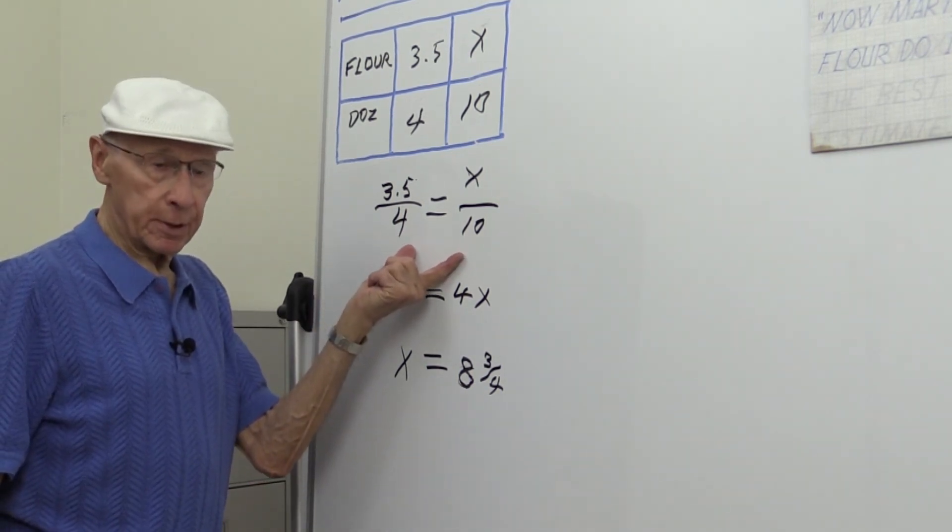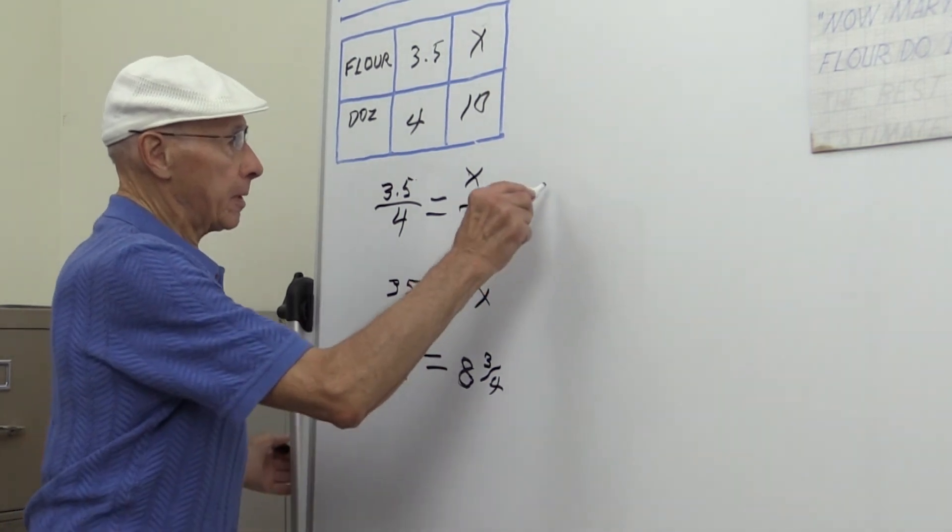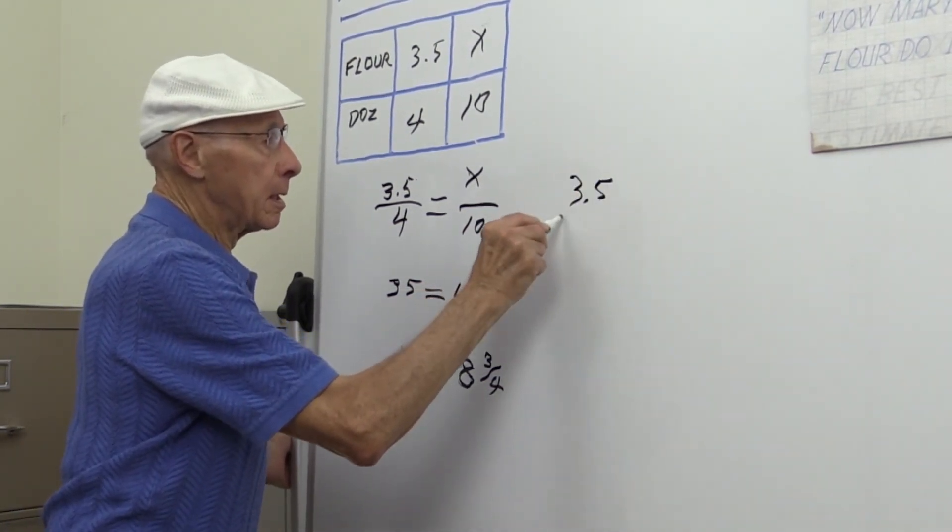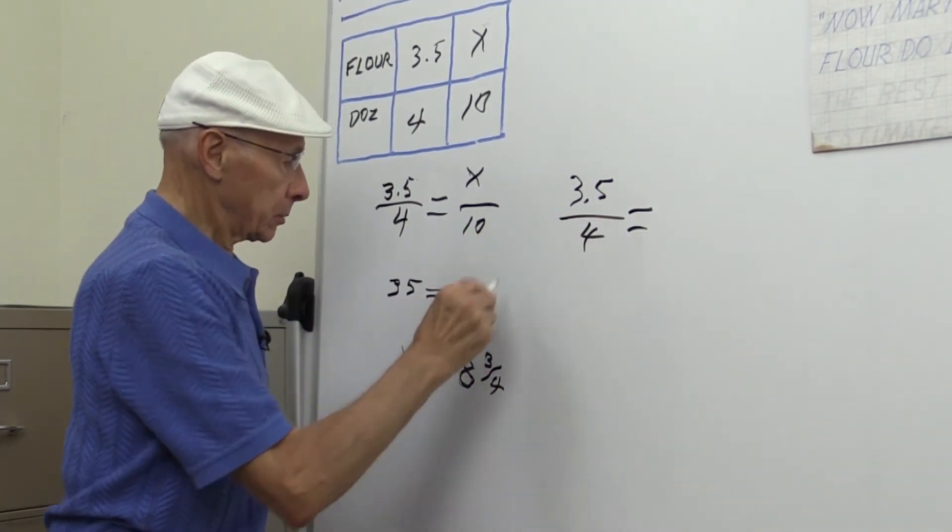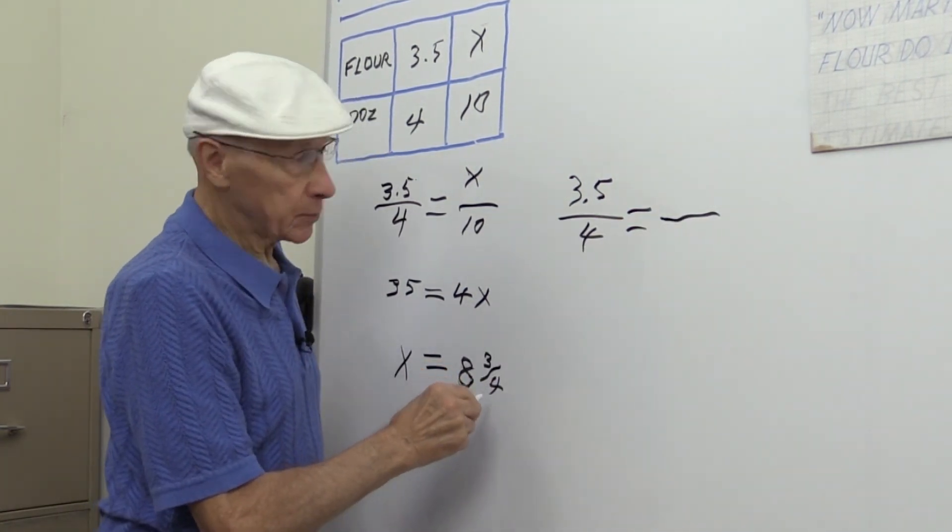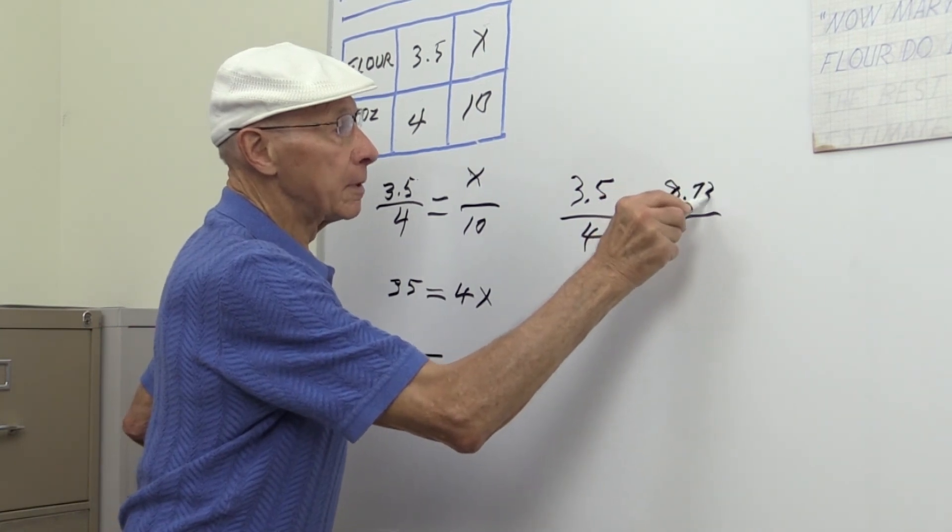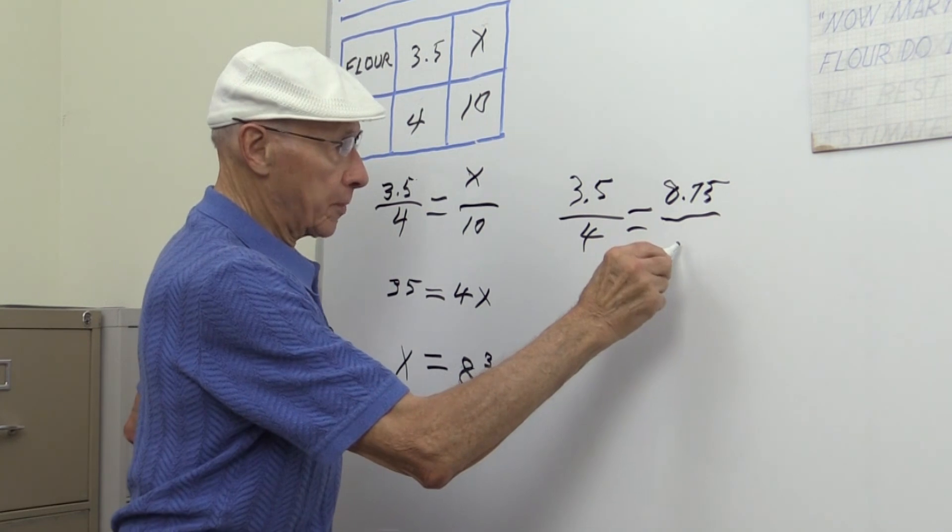These two ratios here. So let's just do that. We have 3.5 divided by 4 as the first ratio, and this is equal to—and I'll change this three-quarters to a decimal—this will be 8.75 over 10.